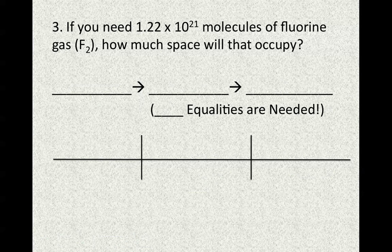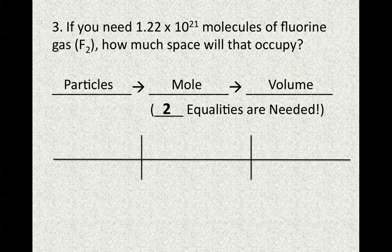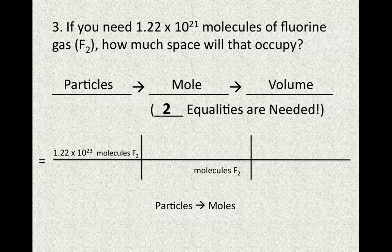In this third example, try setting it up on your own and then check your work. As you read the question, notice we're working with one substance — fluorine. Our units are molecules and volume, neither of which are moles, so we'll use two equalities: going from number of particles to moles, and then from moles to volume. Start with your given value: 1.22 times 10 to the 21st molecules of fluorine gas. Going from particles to moles, we have 6.02 times 10 to the 23rd molecules equal to 1 mole of fluorine.